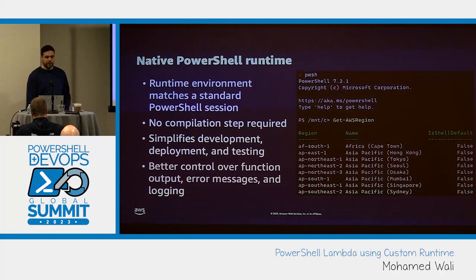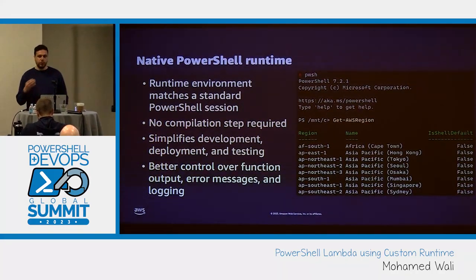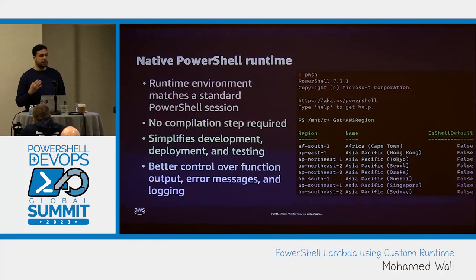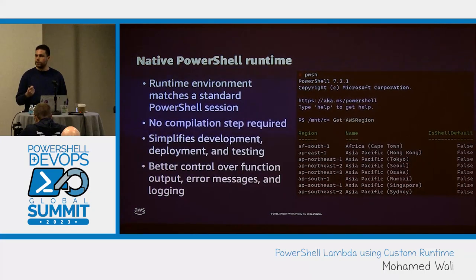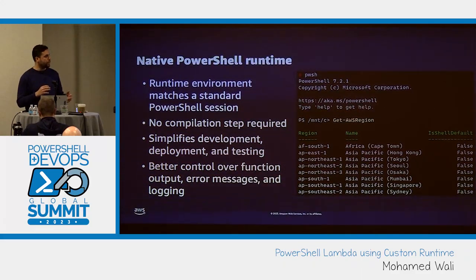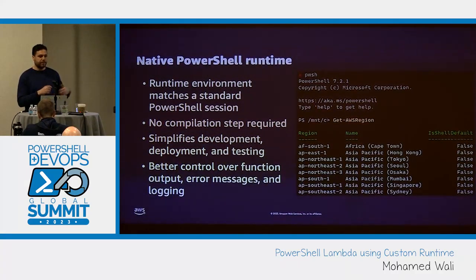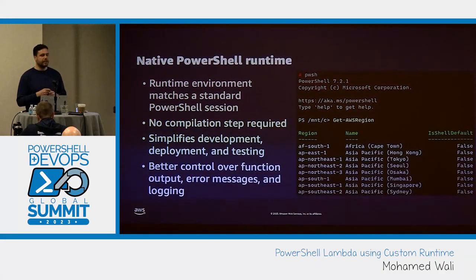The new custom runtime for PowerShell uses native PowerShell instead of compiling it onto the .NET runtime. Using a native PowerShell custom runtime actually matches the standard PowerShell session, which enhances performance while also simplifying the development and testing process. This custom runtime returns pretty much every single place on the pipeline as a function output. With the previous solution, you only got the last output of your PowerShell pipeline. Now you have full visibility for logging, the Write-Output cmdlet, error messages, and so on.